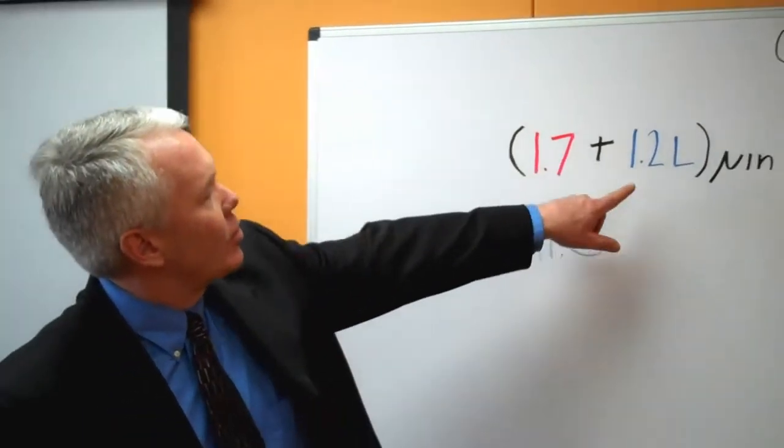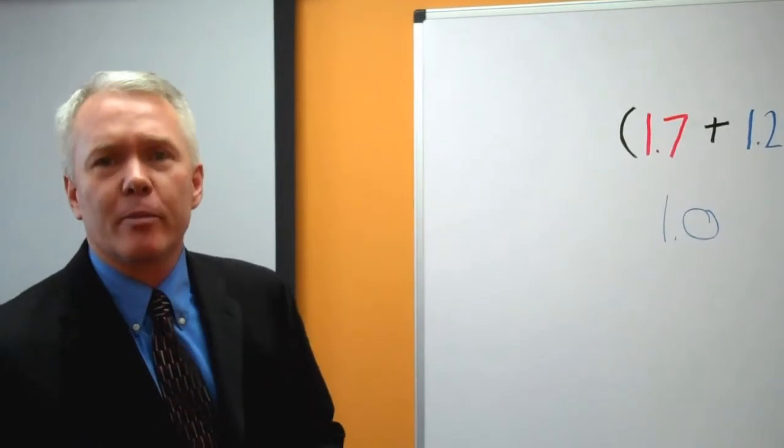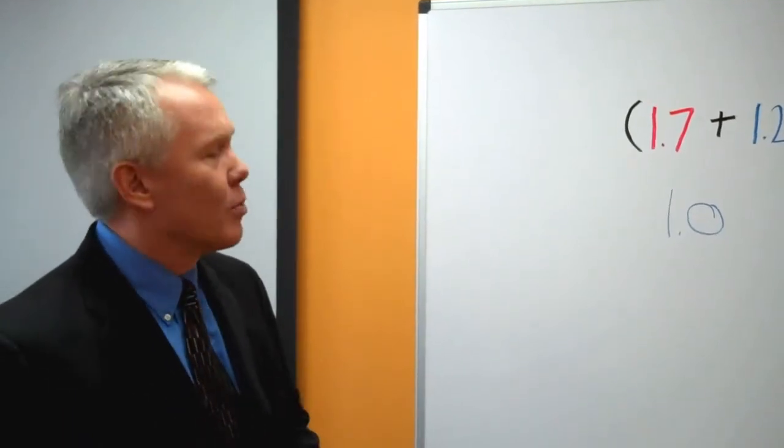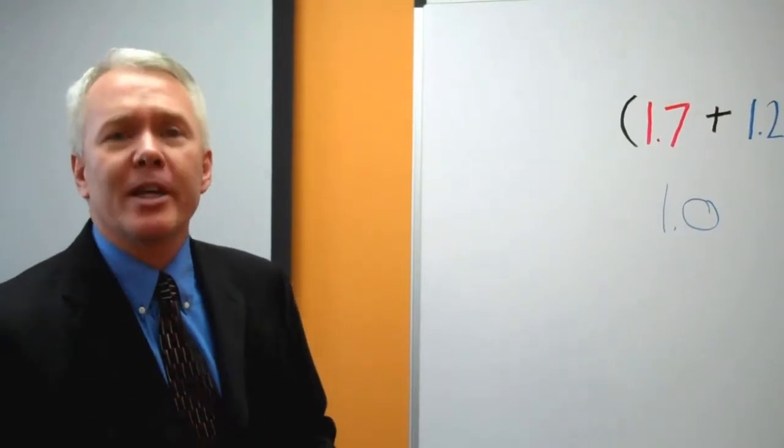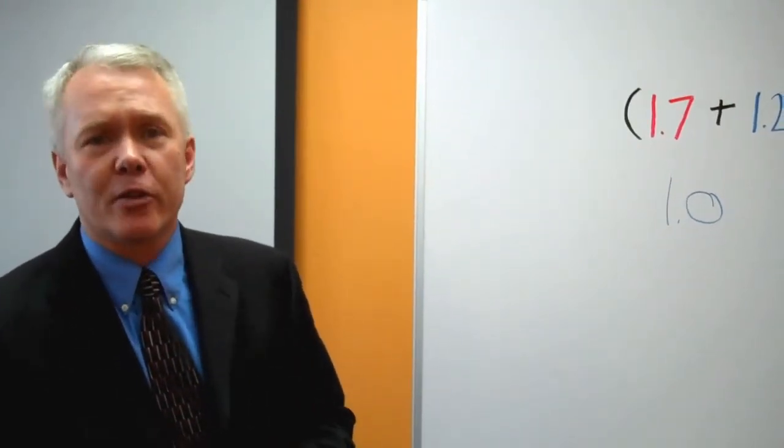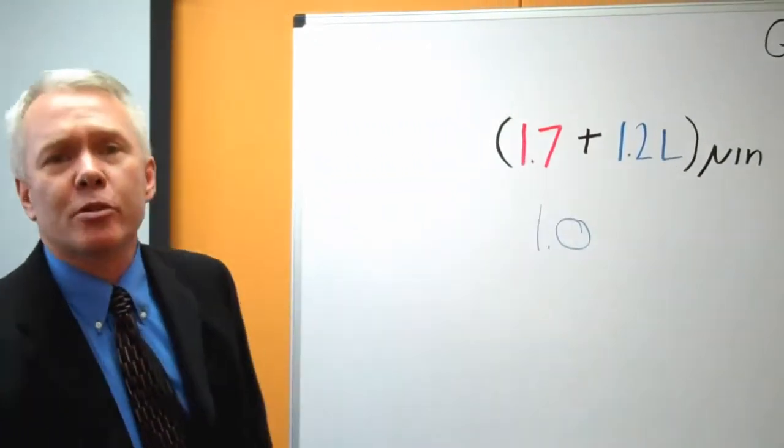We have to use this formula to determine how certain we are in that measurement. Nothing's perfect in the metrology world. When you measure a block and you report it as one inch, it could be slightly bigger. It could be slightly smaller, depending on the uncertainty of your laboratory. So first of all, when you look at a formula like this, it comes in two parts.